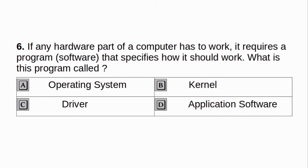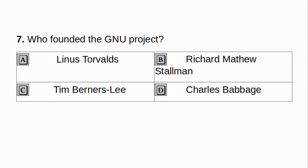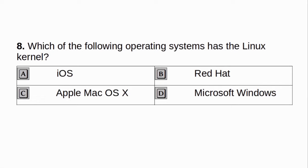If any hardware part of a computer has to work, it requires a program software that specifies how it should work. What is this program called? a. Operating system. b. Kernel. c. Driver. d. Application software. Answer: c. Driver. Who founded the GNU project? a. Linus Torvalds. b. Richard Matthews Stallman. c. Tim Berners-Lee. d. Charles Babbage. Answer: b. Richard Matthews Stallman.